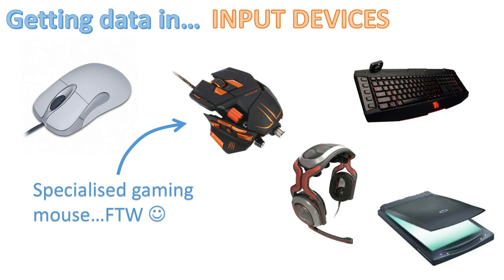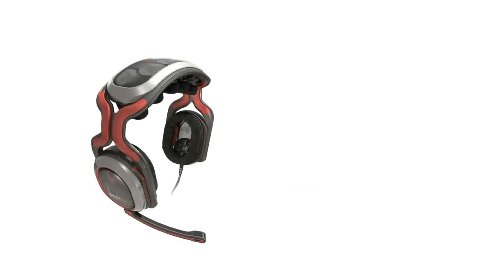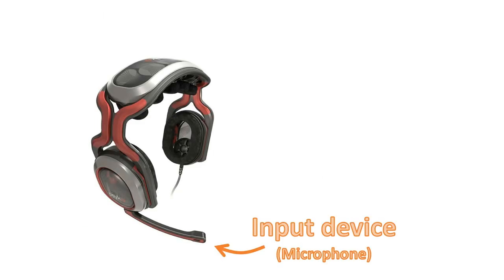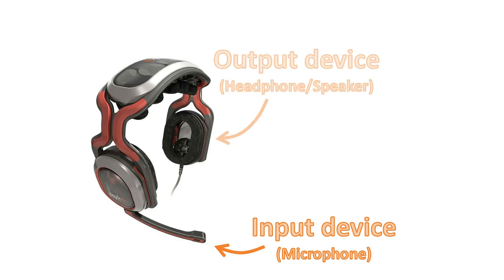Other input devices include a keyboard, a scanner, and a microphone. This headset is a hybrid device — the microphone is the input device, while the headphones or speakers are output devices. Some headsets also include vibration feedback, so if you get shot the headset vibrates. That makes it both an input and an output device.